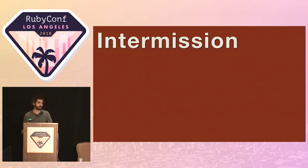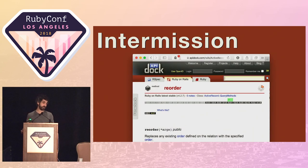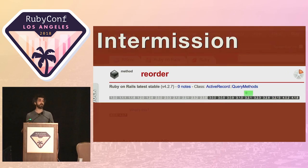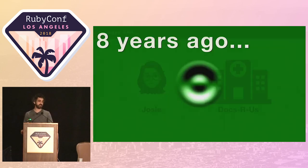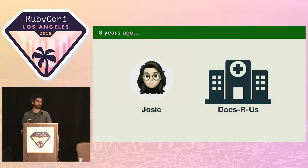The eagle-eyed amongst you may be wondering why Josie didn't just use the reorder method instead, as that would have replaced the existing order clause. Well, that's because I've contrived Josie's timeline so it happened in 2010, which conveniently is before reorder was added to ActiveRecord. Okay, intermission over. Let's get back to the story.